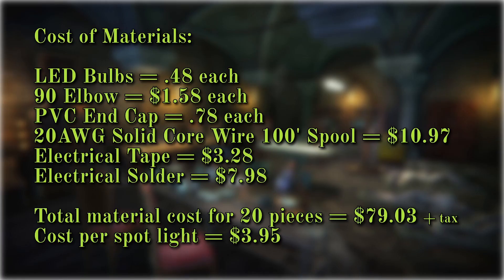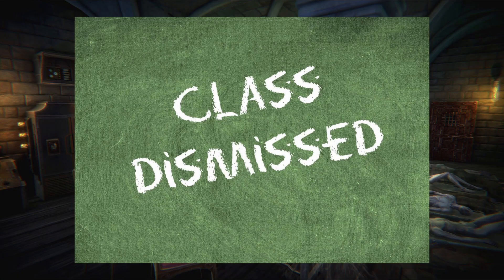So to conclude our lesson, the material costs for about 20 pieces is $79.03 plus tax. Cost per piece is just around $4. You're welcome. Class is dismissed.